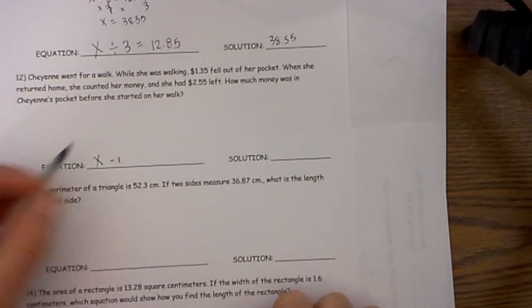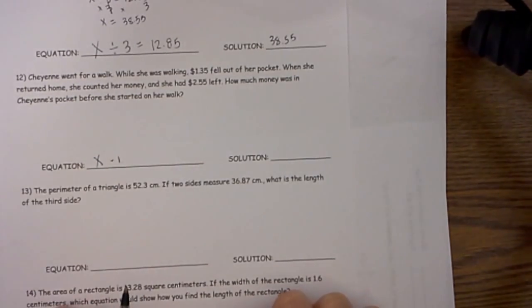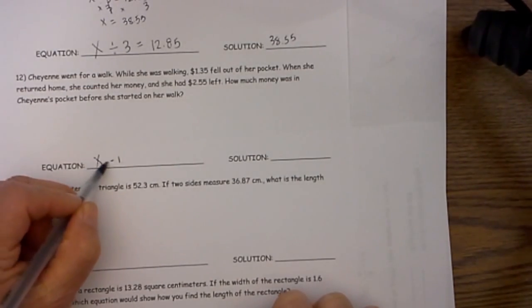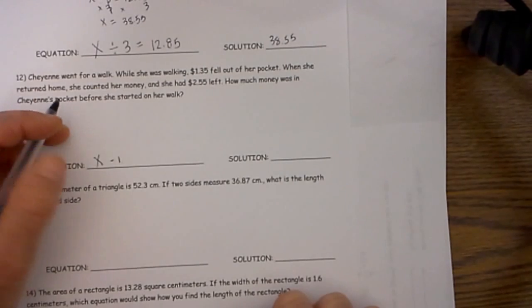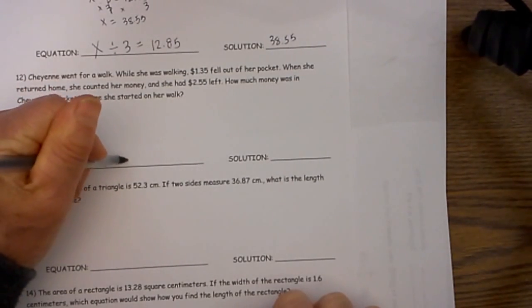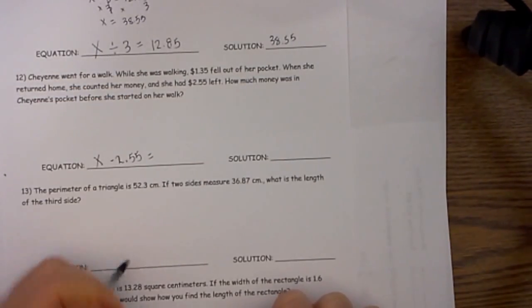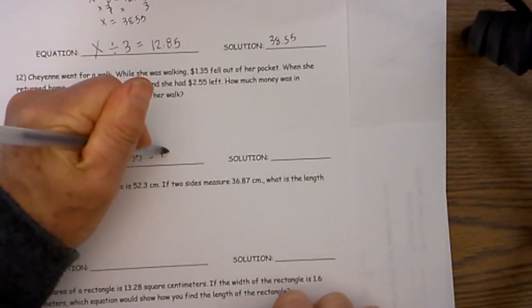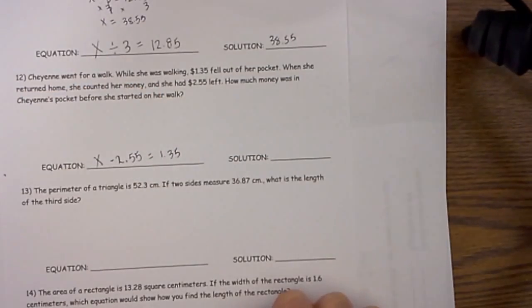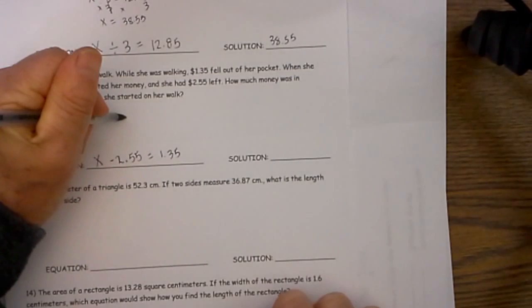Okay so she starts her grand total. Let's call that x. And what had happened was she had x minus $2.55 because that is how much was left when she got home. And that is going to equal the $1.35 that fell out of her pocket. Okay so what we will do let's go ahead and solve that.